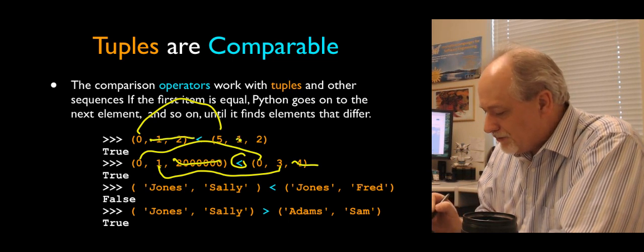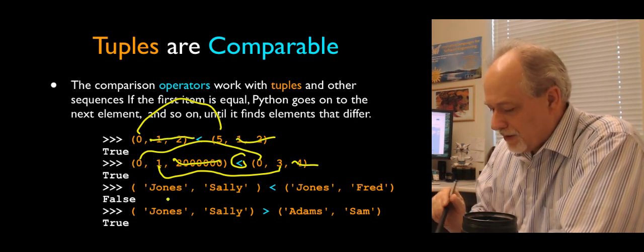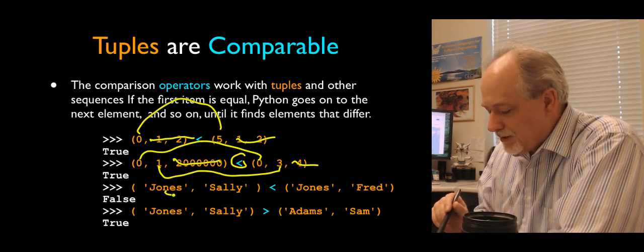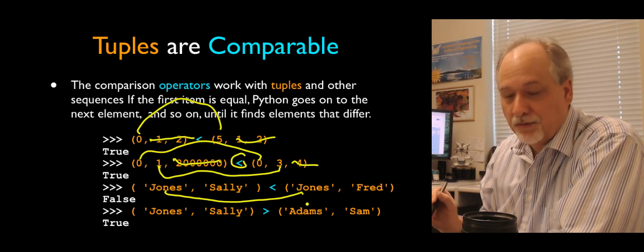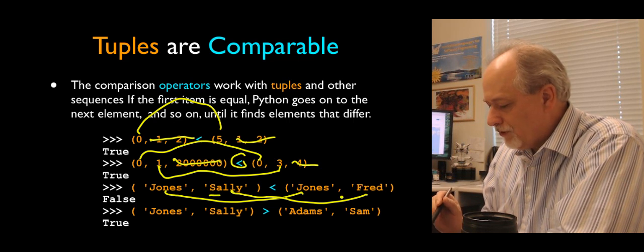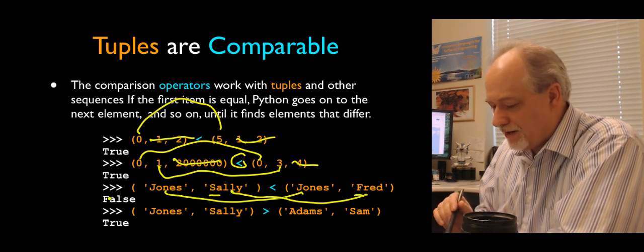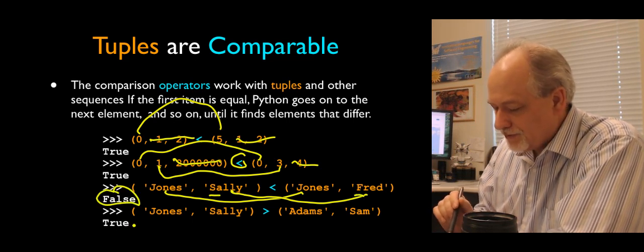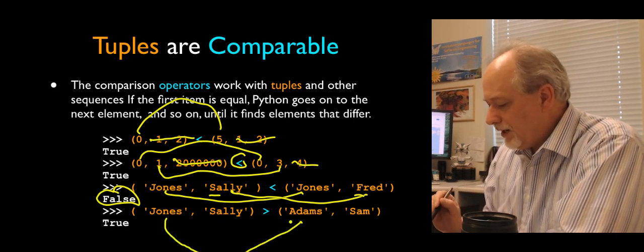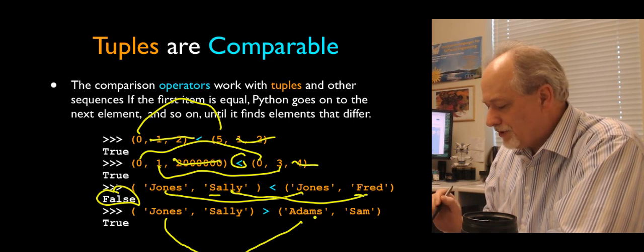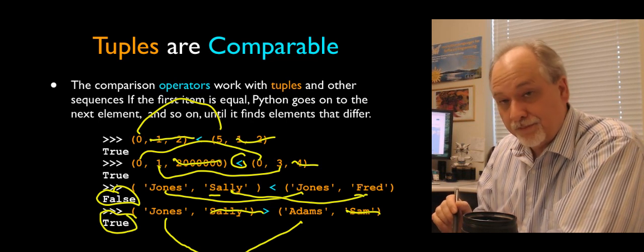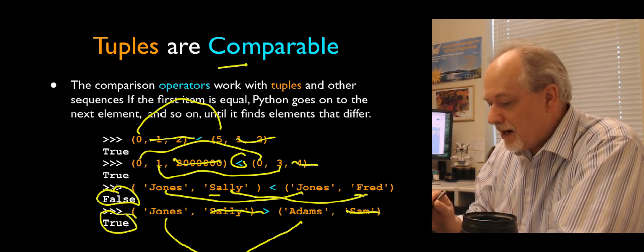And now if we say, is Jones Sally less than Jones Fred? Well, it compares this. They're equal. So then it has to look to the second one. Is Sally less than Fred? Well, no, because S is not less than F. And so that answer is false. Is Jones Sally greater than Adams Sam? Well, Jones is greater than Adams, so it never looks at these variables. And that turns out to be true.